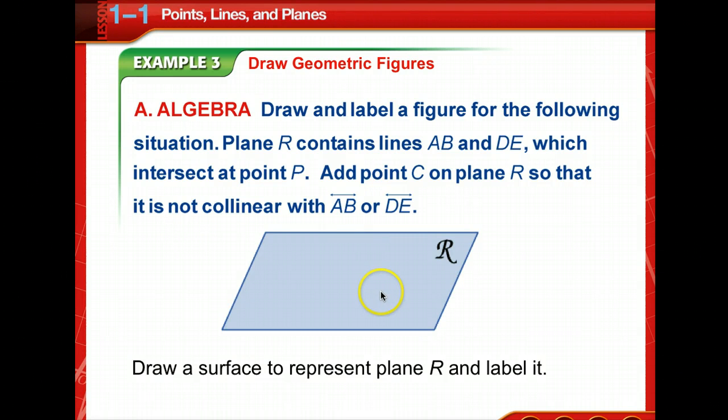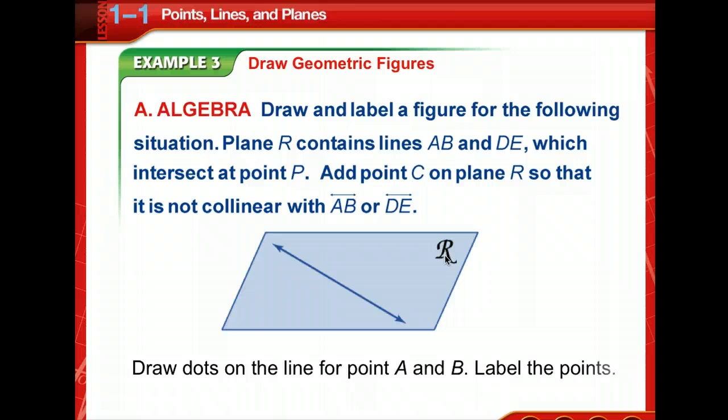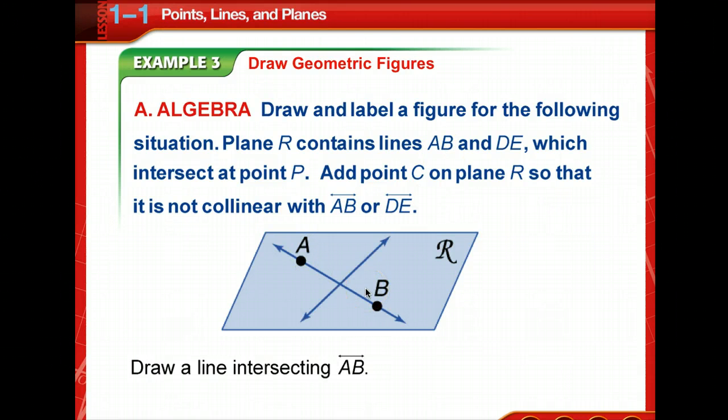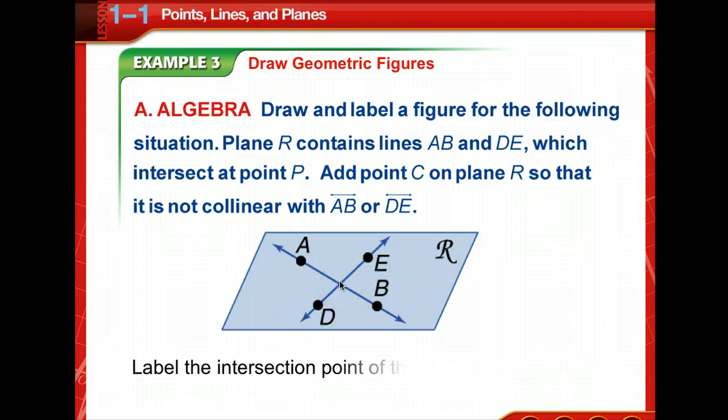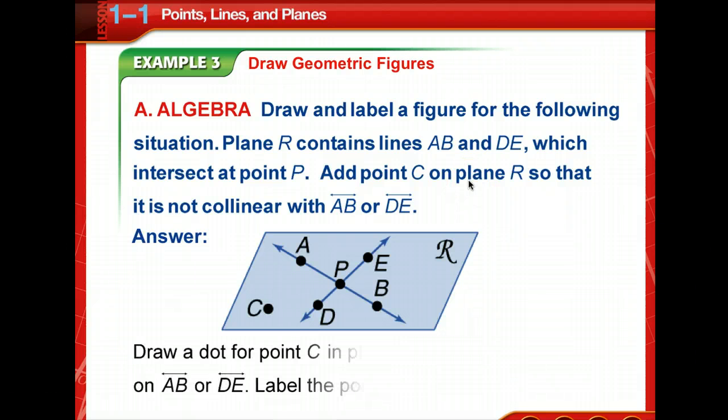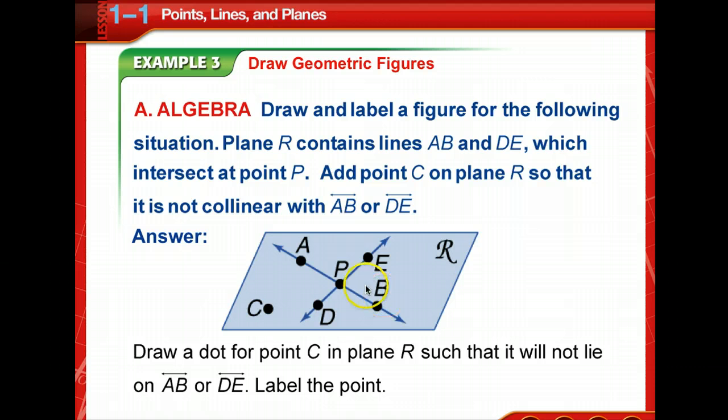So, we're going to draw a surface to represent the plane R. We're going to label that. Nope, we're going to pick anywhere on this plane to draw a line. We're going to draw that line and we're going to put points AB on it. Okay? So we've got dots on that line for point A and point B, because that's what the first one says to do. Next, we're going to draw a line that intersects line AB. And it doesn't have to be perpendicular, but that one definitely intersects. And can you remember the points that we need to put on that one? Yeah, we need to put a D and an E on that one. So we're going to label it. Now the next thing, which intersect at point P. So right there they intersect. And now we're going to label it as a P, point P. Now we're going to add point C on the plane R. So now we have to put another point on there. There we go. And it cannot be collinear. It can't lie on this line and it cannot lie on this line. Very good. So we drew a dot for point C in plane R such that it will not lie on AB or line DE. Very good.